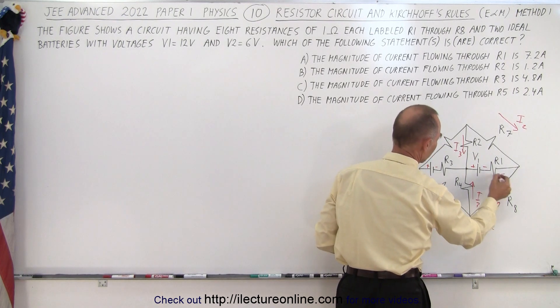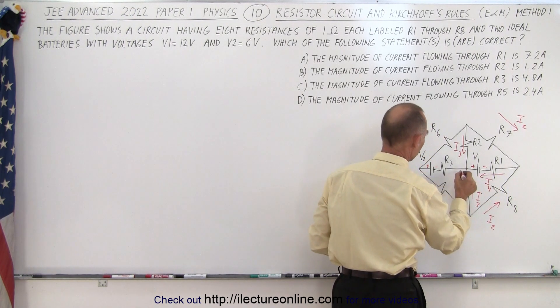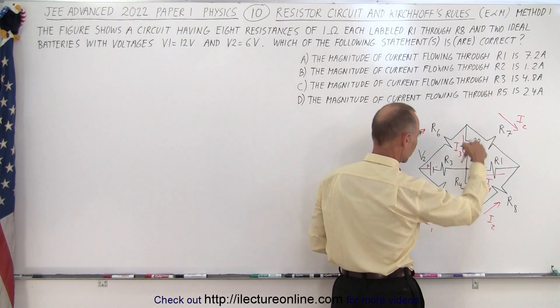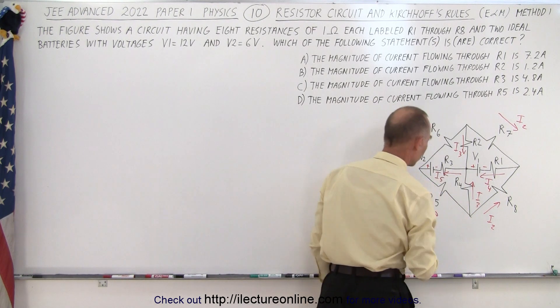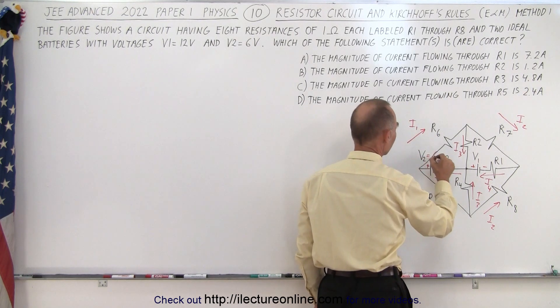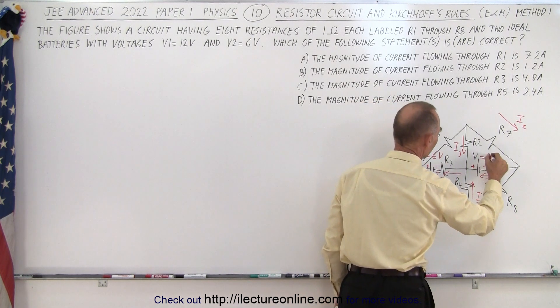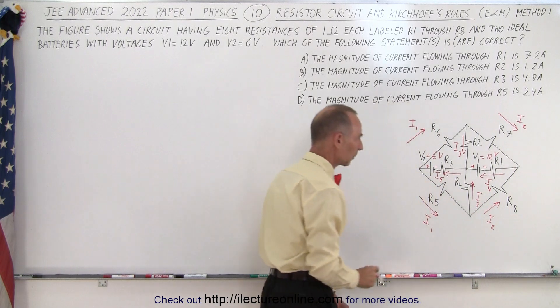And then we have one current in this branch let's call it I4 and another current in this branch let's see I5. So we have five different currents. Also this voltage is the 6 volts and this voltage is the 12 volts. Make sure we don't get those mixed up.